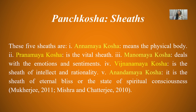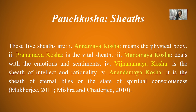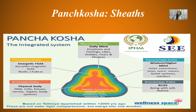The fifth is the sheath of eternal bliss. It can be said that this is the state of spiritual consciousness. The scripture refers to Parampita Paramatma. The five koshas are: Annamai, Pranamai, Manomai, Vijnyaan, and Anandamai Kosh.